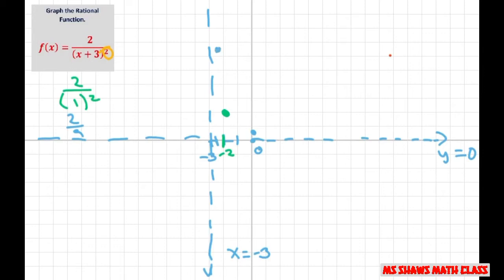So your graph on this side of x equals negative three goes like this. It's never going to cross because remember, our horizontal asymptote will never get to y equals zero, but it gets very close. So there it is.